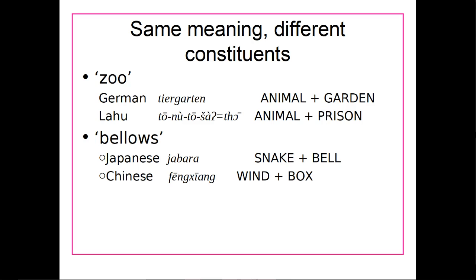Those are actually in your book, if you have it, so you can look them up there or just Google them. There are examples of compounds in different languages where we have the same meaning but different words combining to form that meaning. In German, 'animal' plus 'garden' combines to form 'zoo.' In Lahu, 'animal' plus 'prison' combines to form 'zoo.'